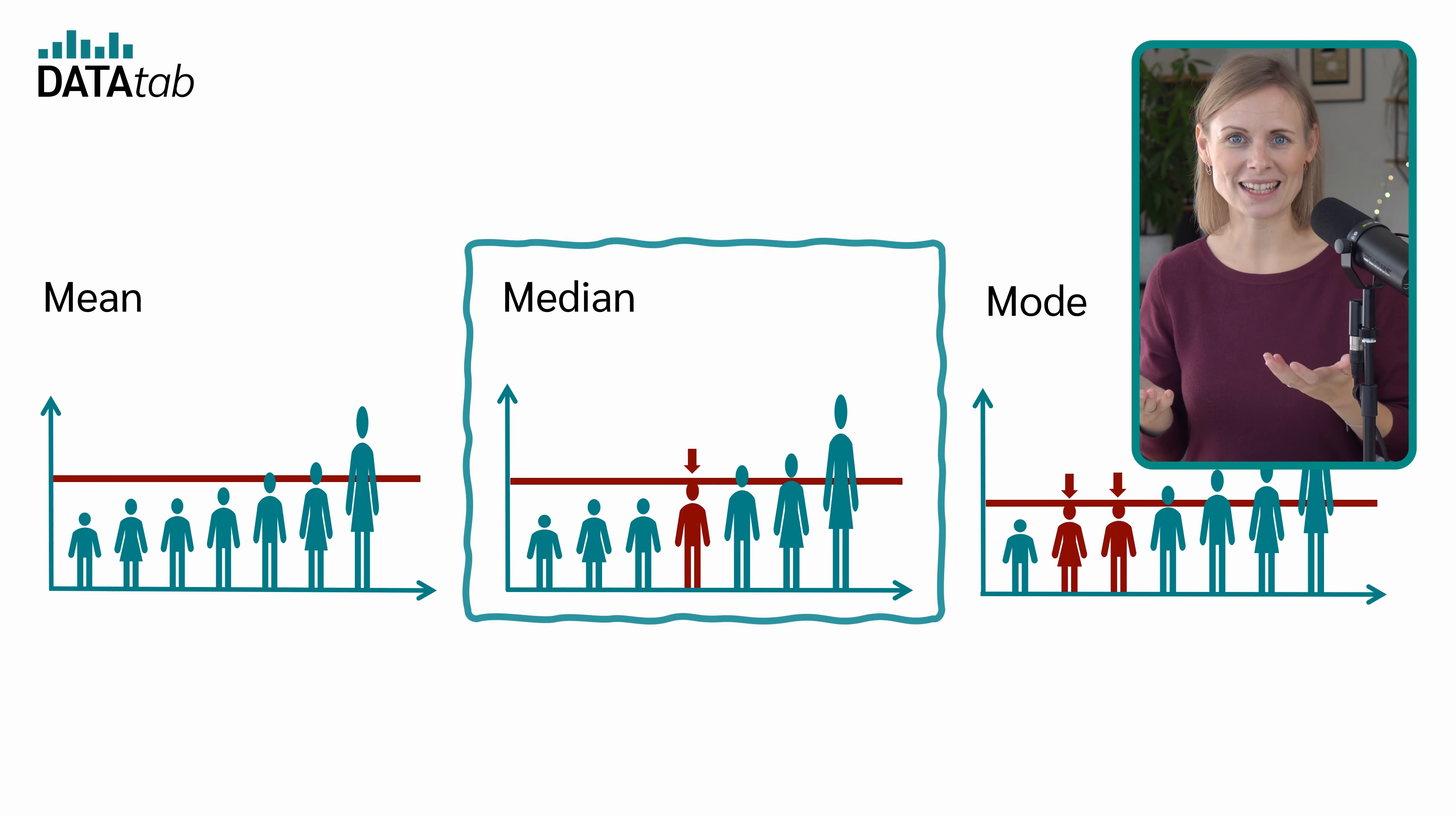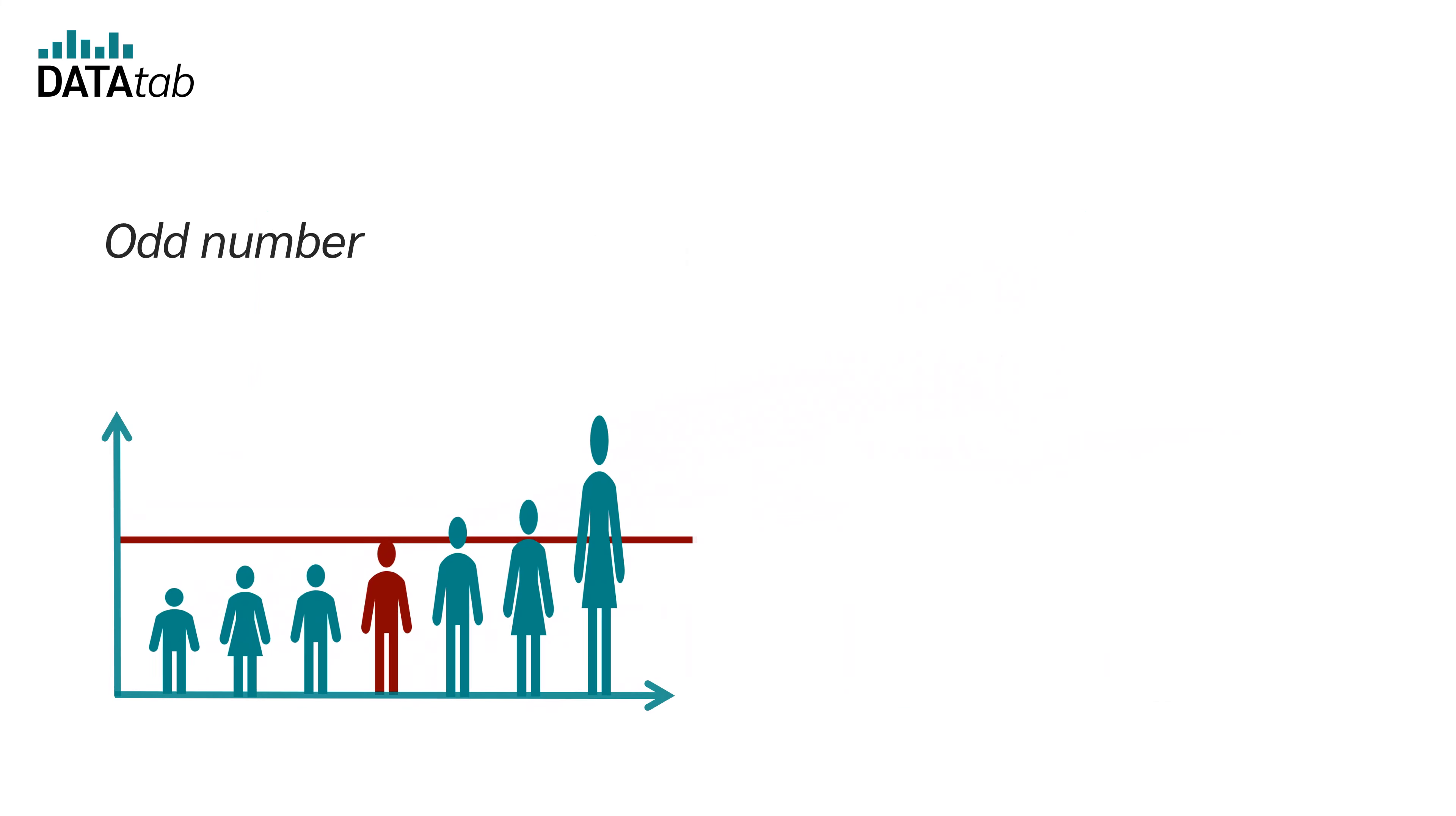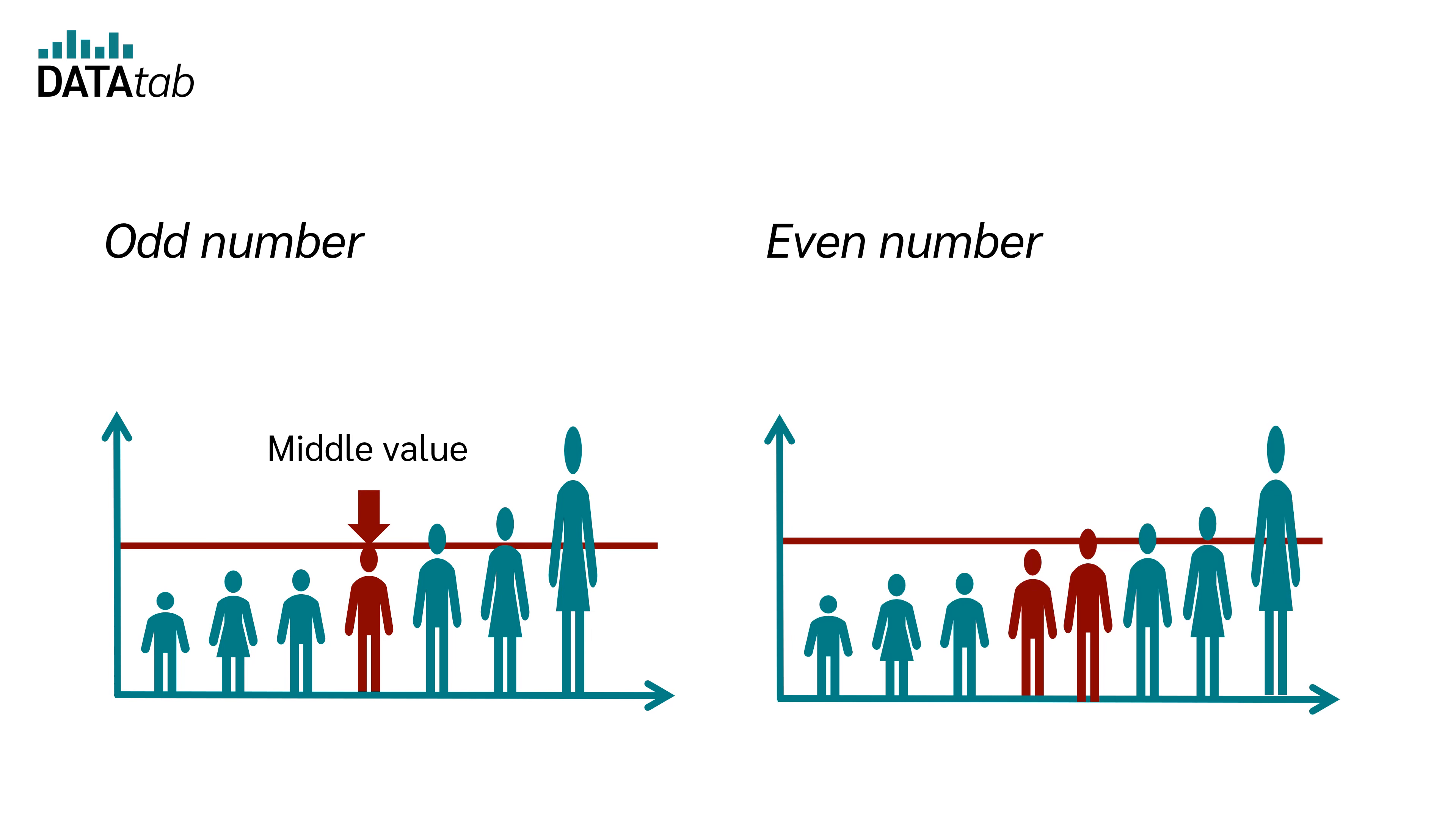What about the median? When the values in a dataset are arranged in ascending order, the median is the middle value. If there is an odd number of data points, the median is simply the middle value. If there is an even number of data points, the median is the average of the two middle values.